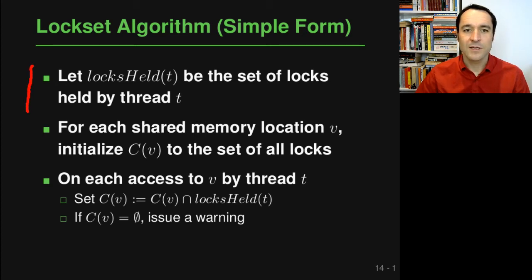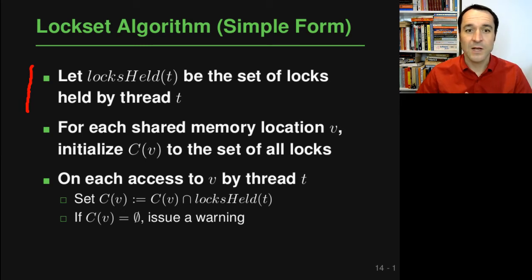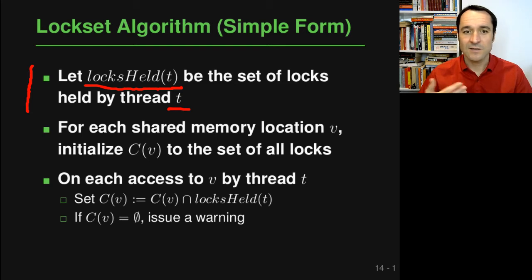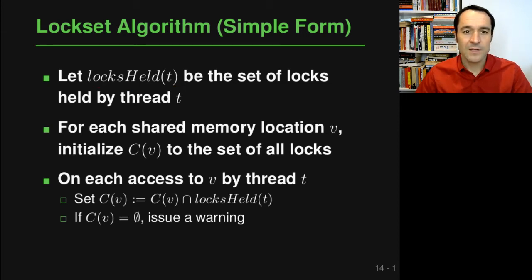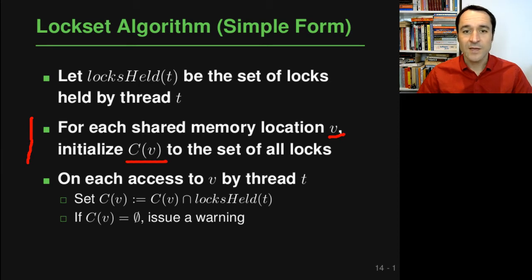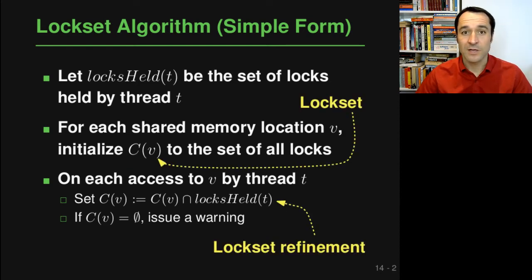While the program is executing, the dynamic analysis keeps track of all the locks held by a particular thread of execution. So locks_held(T) tells us for a thread T what locks T currently has. This set is simply updated by looking at all the lock acquisitions and lock releases that threads are performing, adding and removing locks from the current locks_held set. The analysis also looks at every shared memory location, and for each such location V it initializes a set C(V), representing the locks that could be held while accessing V. This set C(V) is called the lockset, and there is one such set for every memory location shared among different threads.